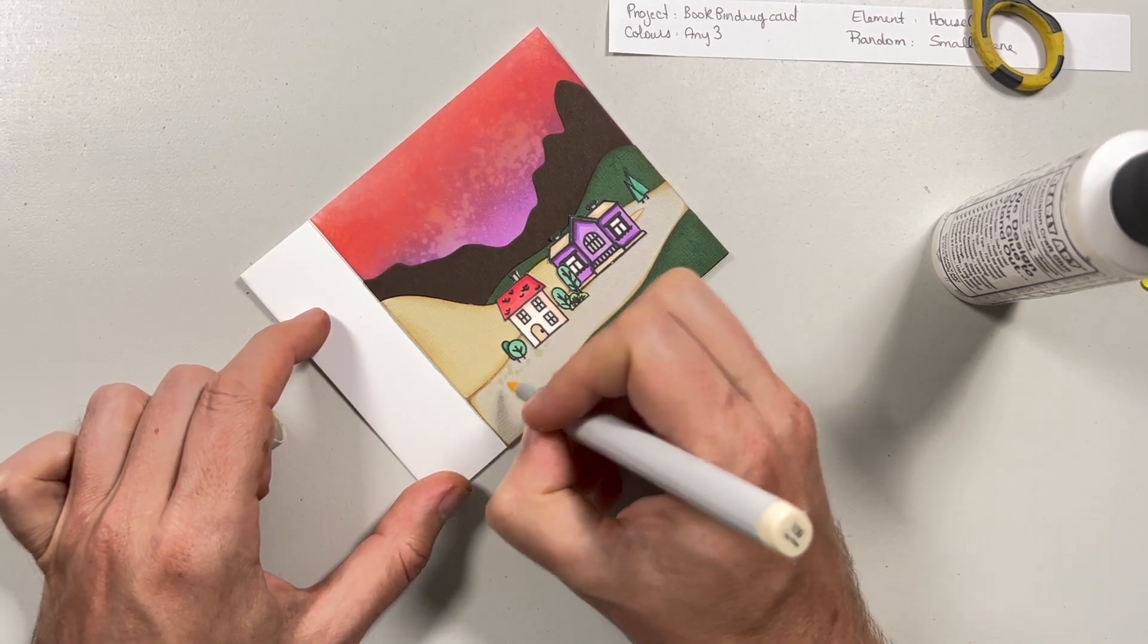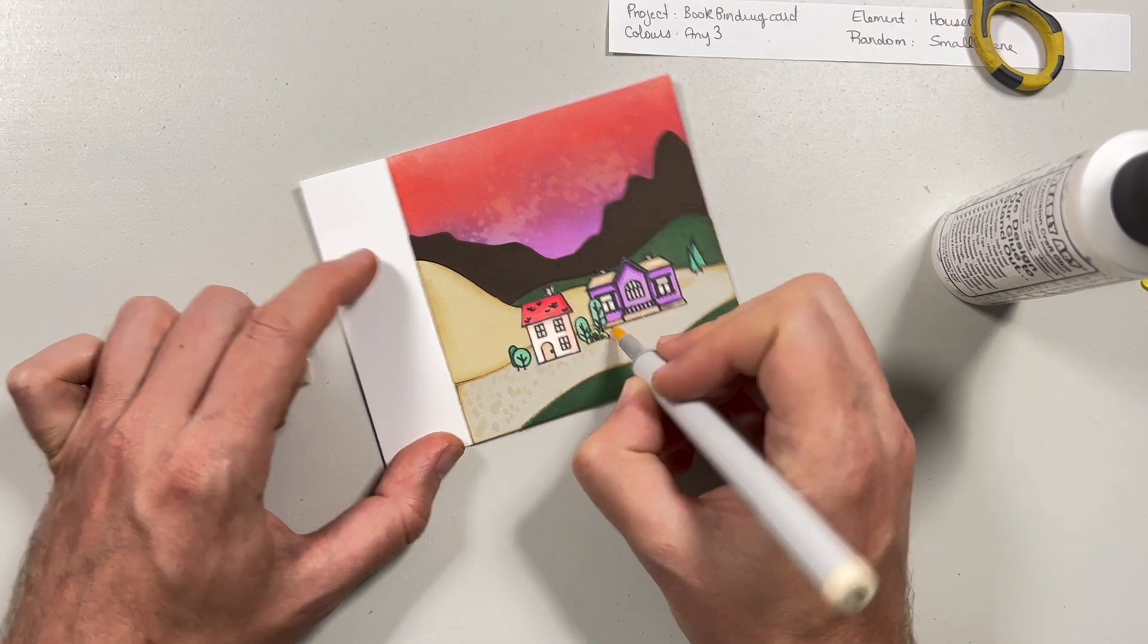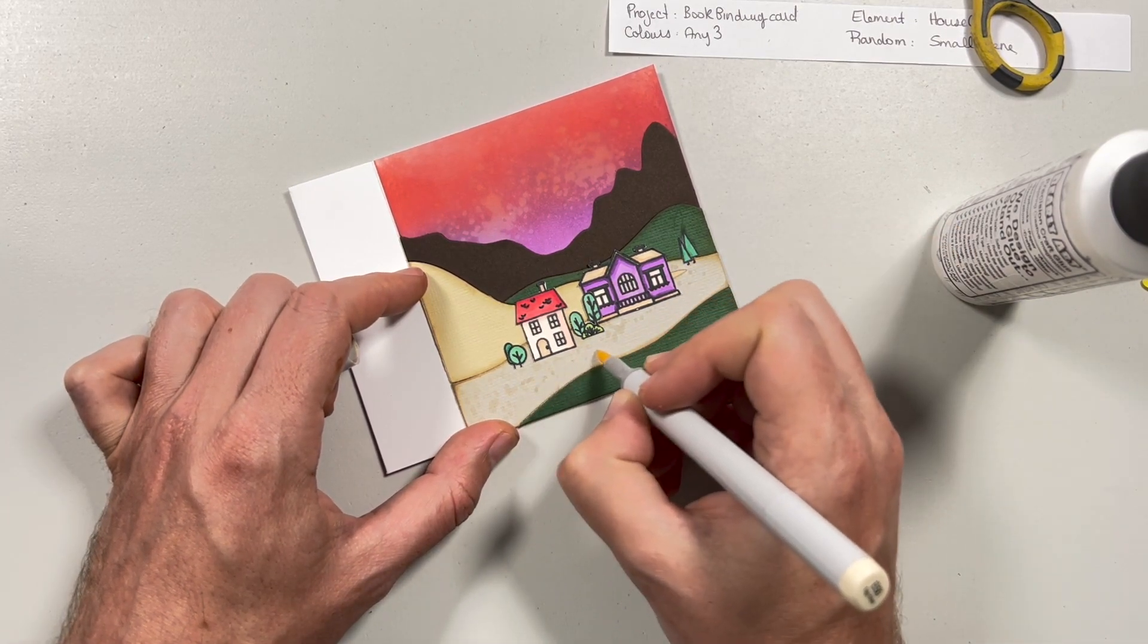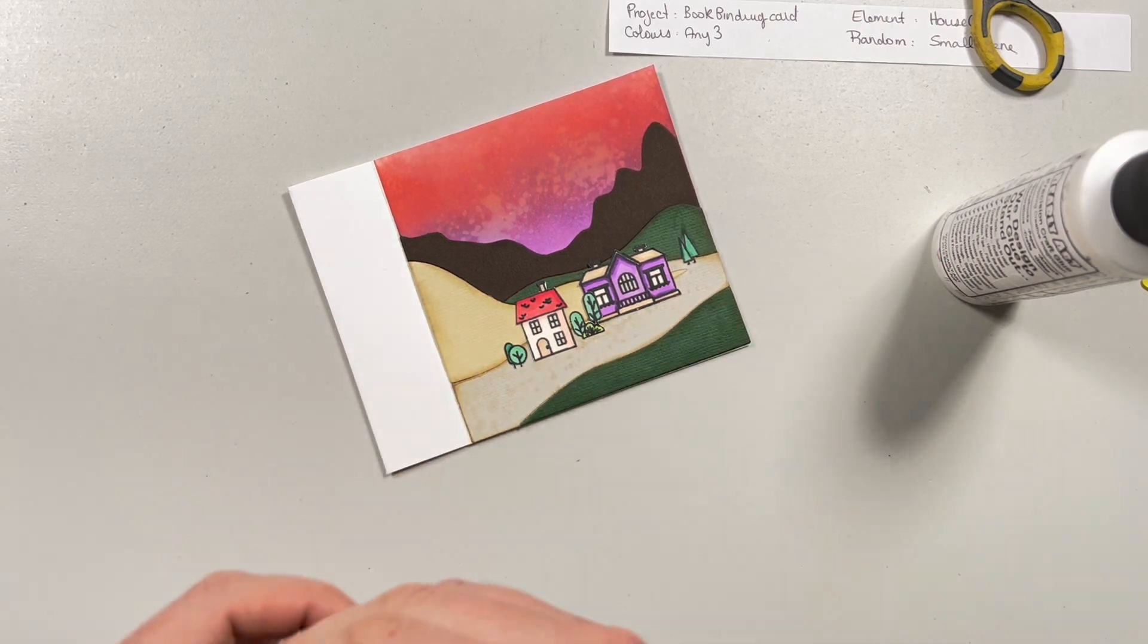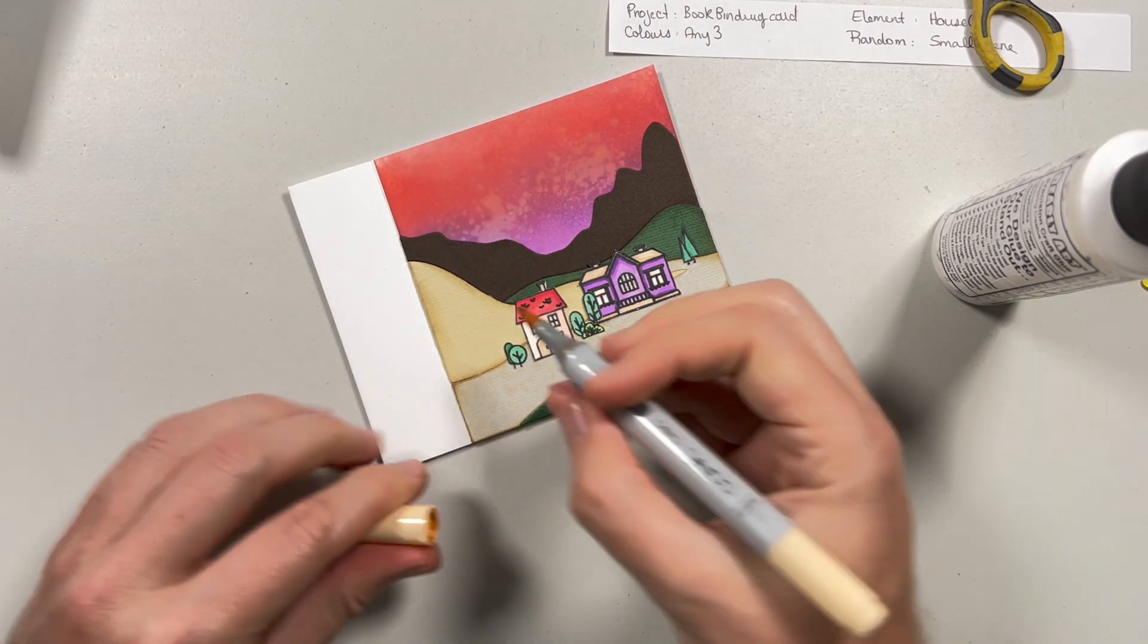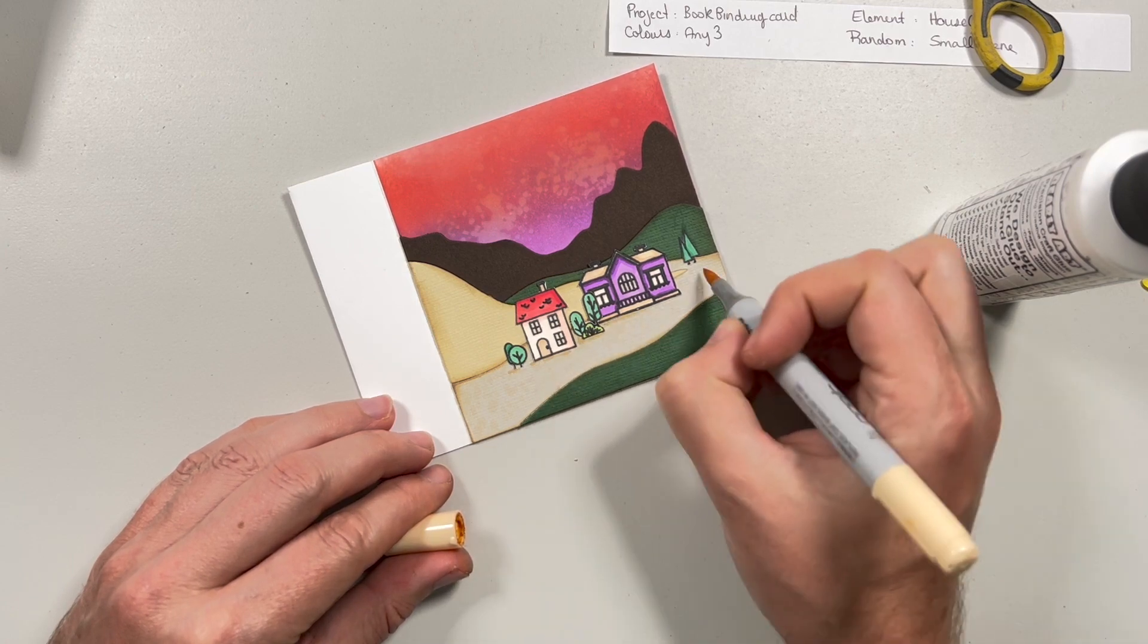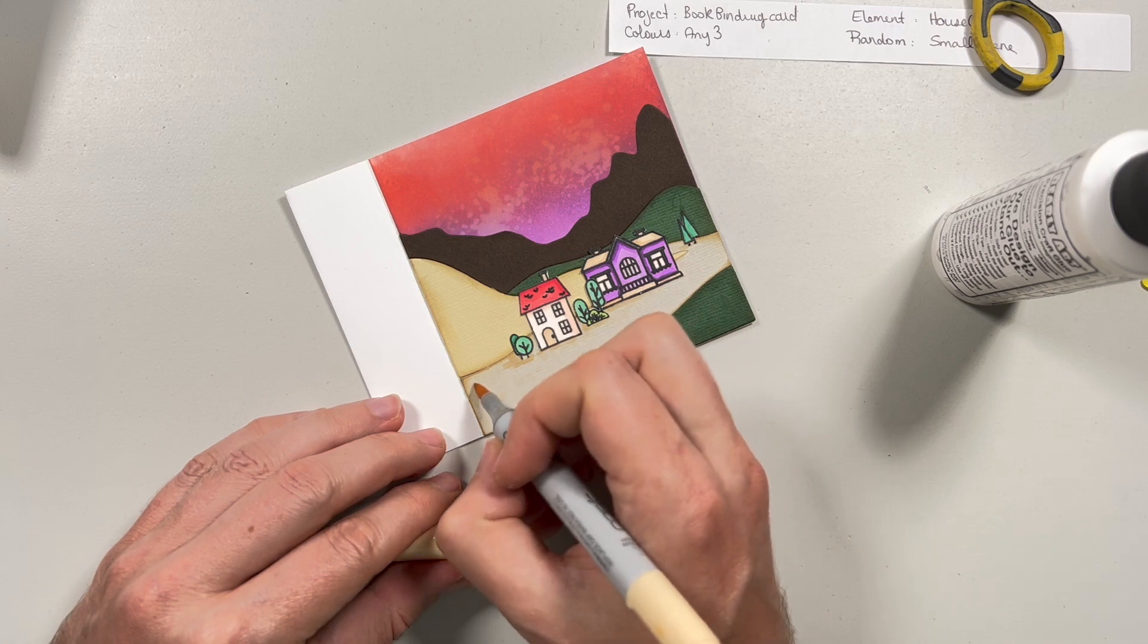I'm then going to take this alcohol marker. I think it's eggshell. E50 maybe. And I'm just going to do a bunch of little dots. Kind of give the ground a little bit of texture. I'm already using linen style cardstock but this will allow me to just add a little bit more separation and shading and stuff like that.